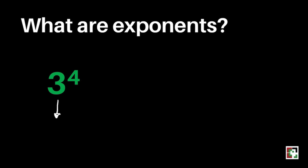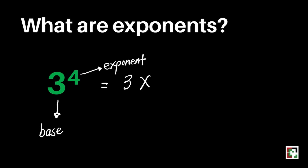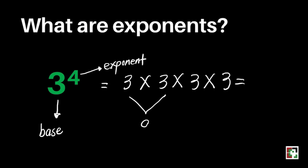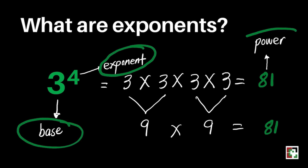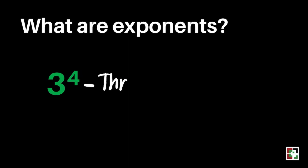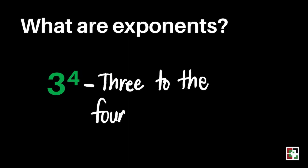For example, we have here 3 to the 4th power. 3 is considered our base, and 4 is our exponent. The exponent tells us how many times we'll write the base — that's 4 times: 3 times 3 times 3 times 3. To get the value: 3 times 3 is 9, then 9 times 9 is 81. 81 is what we call our power. Please take note of our terms: base, exponent, and power. We read this as 3 to the 4th power.